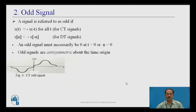Odd signal: A signal is referred to as odd if it satisfies the condition x(t) = -x(-t) for all t for a continuous time signal, and x(n) = -x(-n) for a discrete time signal. An odd signal must necessarily be 0 at t = 0 or n = 0. Odd signals are anti-symmetric about the time origin.